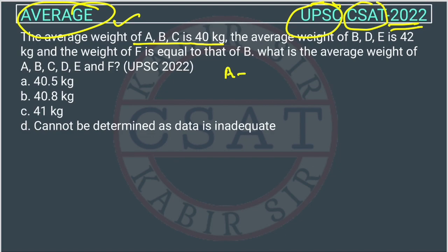What is given? The average weight. So, this is the formula of average weight and this is equal to 40. So, ABC will be equal to what? A plus B plus C will be equal to 120.